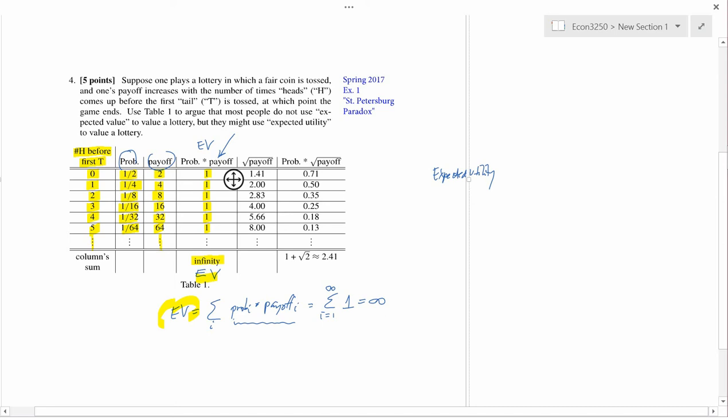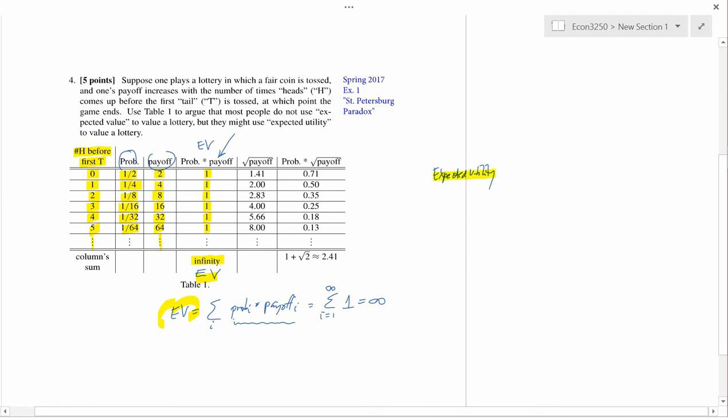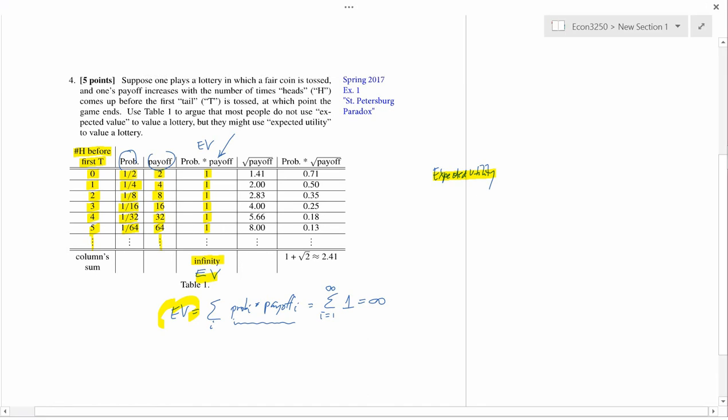In the previous video we talked about the problems with valuing probabilistic outcomes using expected value. I gave the example of the St. Petersburg paradox. In this particular game, the expected value is infinity, but it seems quite intuitively not plausible that anybody would pay a large amount of money for the privilege of being able to play this game. So economists have come up with an alternative to expected value. And as I mentioned at the very end of our previous video, that alternative is called expected utility.